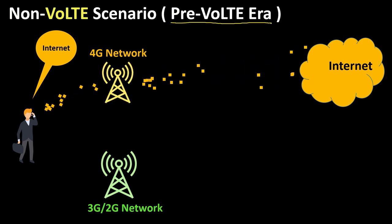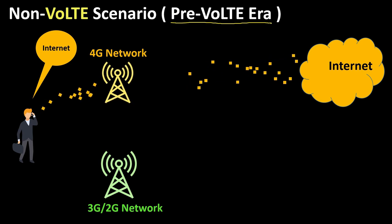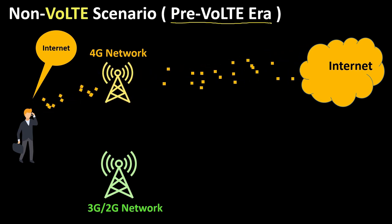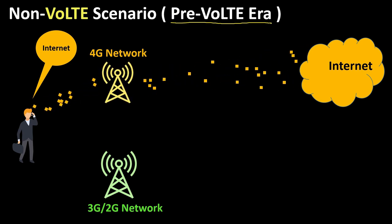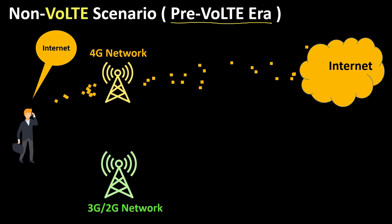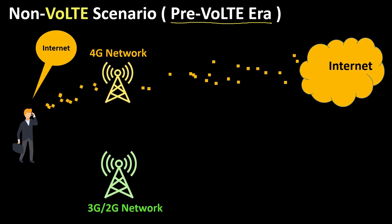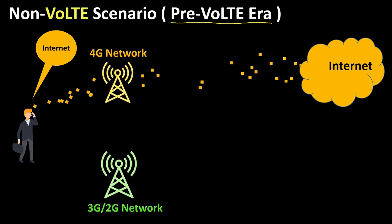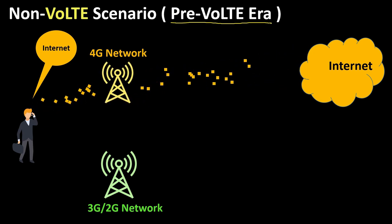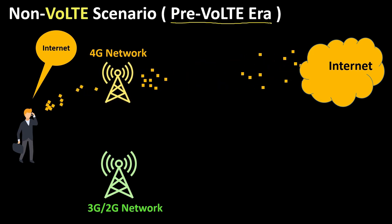Since 4G is an all IP-to-IP technology, it therefore cannot transport circuit switch services such as voice calls. You can see on the screen there are many data packets moving between the internet and the user using the 4G network. Let's see how voice works in this scenario.